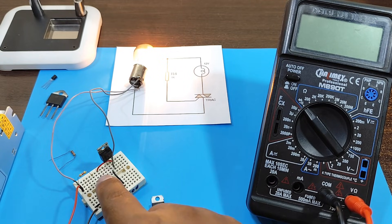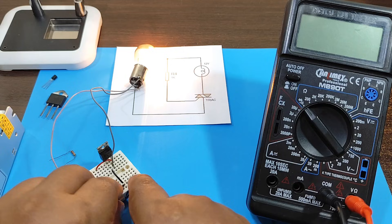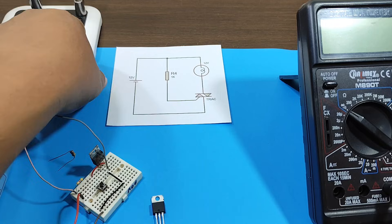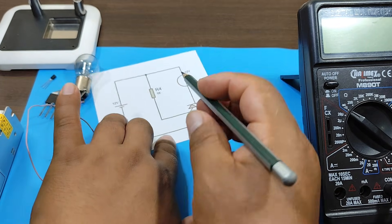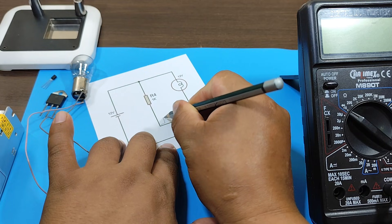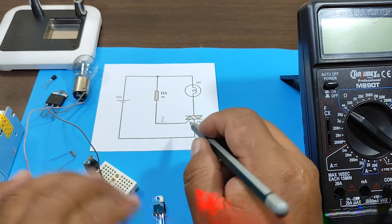That is, I didn't have to hold the button down. To turn it off, we have to interrupt the current. Now, this means that the triac only needs a short pulse to activate, and it will remain activated until the power supply is cut off.